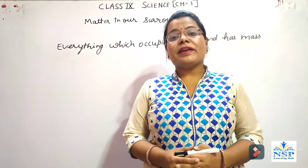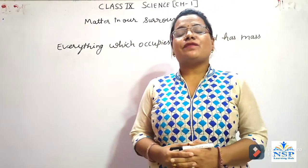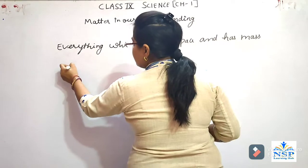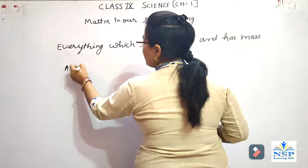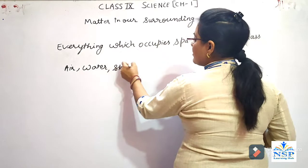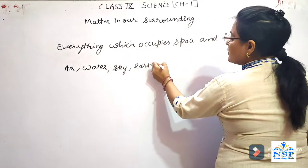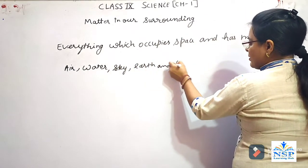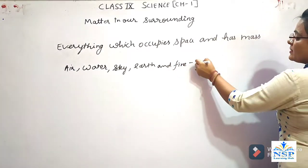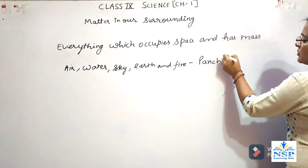Early Indian philosophers classified matter in 5 basic forms, which are air, water, sky, earth and fire. They called these the panch tatva — matter is made up of these five elements.